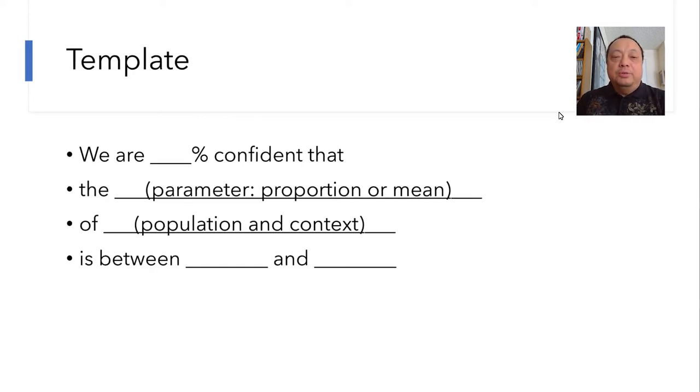Here's a template you can use. We are blank percent confident that the blank parameter such as proportion or mean or whatever you are calculating of blank, and this blank is where the context goes. Make sure you have the population and the context from the question. And often you can just copy verbatim from the question prompt, and then follow that with the result: is between blank and blank.